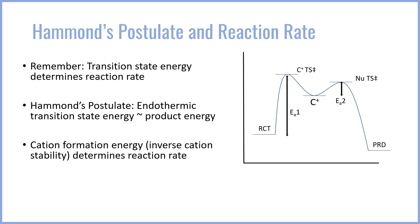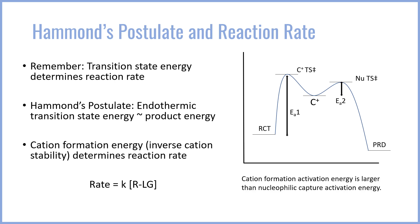As a result, cation formation energy — which is the reverse of cation stability — determines the rate of the SN1 reaction. In other words, the rate of the SN1 reaction is going to only be related to the rate constant times the concentration of the R leaving group compound. The concentration of the nucleophile will not impact the reaction rate at all. You might also notice that there is an activation barrier for the capture of the nucleophile, denoted by EA2. However, that activation barrier is much smaller than it is for the activation barrier of cation formation. As a result, cation formation with the larger activation barrier is the rate-determining step.